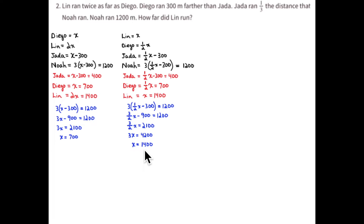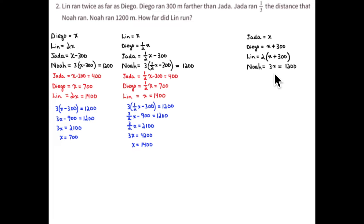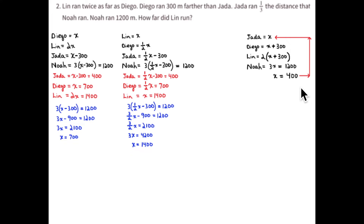Two times 700 equals 1,400. I know this is tough and takes a lot of words to explain, but with practice you will get it. Let's make Jada equal to x. That means Diego is 300 meters more than Jada, so Diego is x plus 300. Lin is two times farther than Diego, so that's two times the expression for Diego. And Noah is three times what Jada ran, so Noah is 3x equals 1,200. So x equals 400 because it's one-third of 1,200.